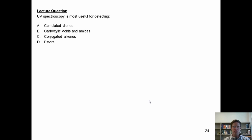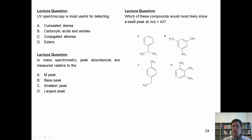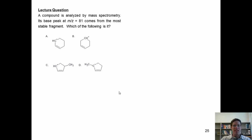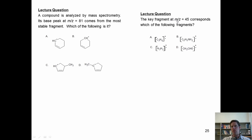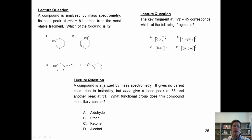Here are standardized exam-type questions. UV spectroscopy is most useful for detecting what? In mass spectrometry, peak abundances are measured relative to what? Which of these compounds would most likely show a base peak at m/z equals 43? And: mass spectrometry separates fragments according to what? Next: a compound analyzed by mass spectrometry has a base peak at m/z equals 81 from the most stable fragment — which of the following is that fragment? The key fragment at m/z equals 45 corresponds to which fragment? And: a compound gives no parent peak but does give a base peak at 55 and another at 31 — what functional group does it most likely contain?